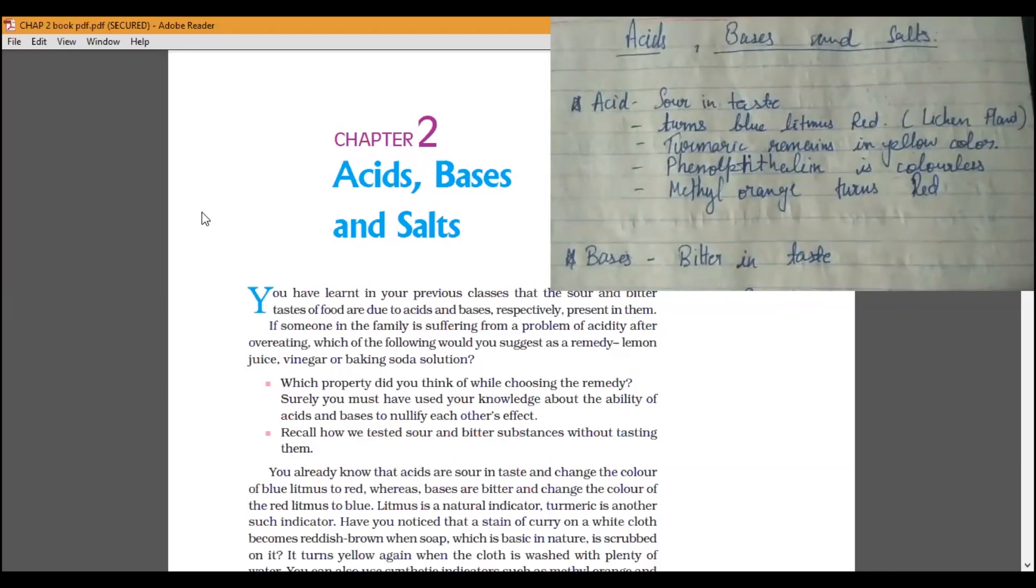We all know how much we have to learn. What is Litmus paper? Leachin. Leachin is a plant and it is made of Litmus paper.